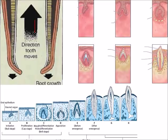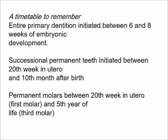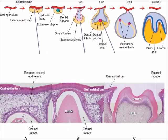During tooth development the tooth is moving upward and the root is moving downward. You have to remember the stamp table for the dating of the development of the teeth, both permanent and deciduous. This diagram shows development from the primary epithelial band to the bell stage and deposition of hard tissue formation.